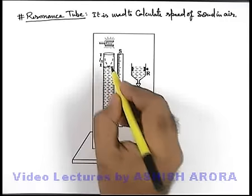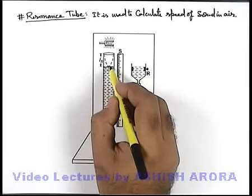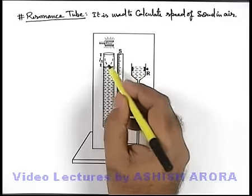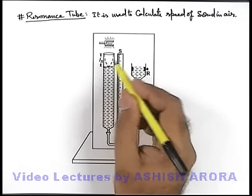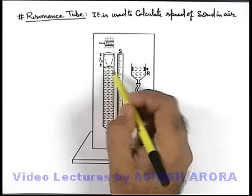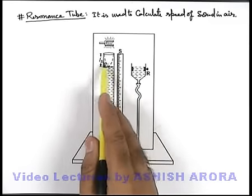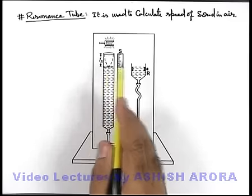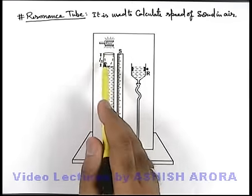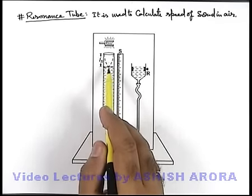But stationary waves will establish only when the length of air column matches with one-fourth of the wavelength. This we can detect by an increase in sound loudness, because once stationary waves are established in the tube, the amplitude of oscillations will start increasing, as the oscillation energy supplied by the tuning fork will be stored in the air particles producing stationary waves.